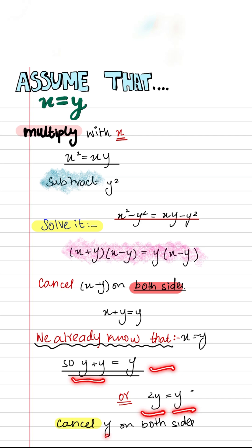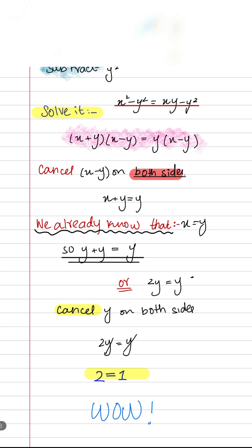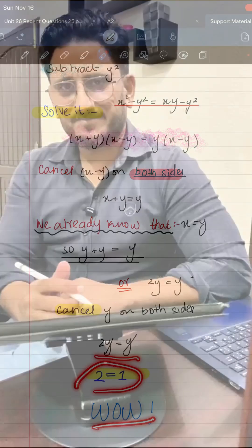Now we cancel y on both sides and we can clearly see that 2 is equal to 1. Wow! Find out the mistake and let us know in the comment section.